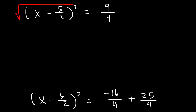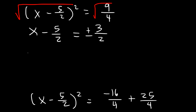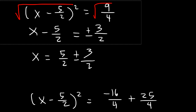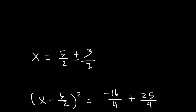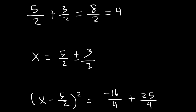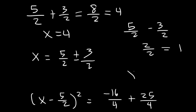Now let's find the square root of both sides. The square root of 9 is 3 and the square root of 4 is 2, and it's plus or minus. So now I'm going to add 5 over 2 to both sides: 5 over 2 plus or minus 3 over 2. We don't have a square root, so we can combine those two fractions to give two separate answers. The first answer is 5 over 2 plus 3 over 2: 5 plus 3 is 8, so that's 8 over 2, which reduces to 4. The second answer is 5 over 2 minus 3 over 2: 5 minus 3 is 2, and 2 over 2 is 1. So we got x equals 4 and x equals 1.